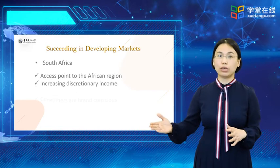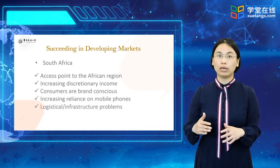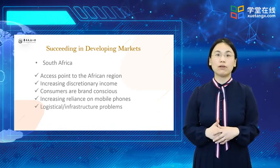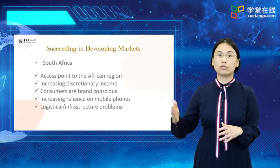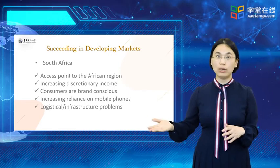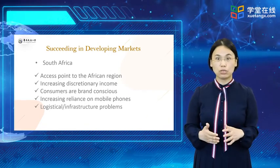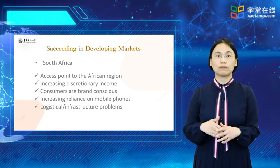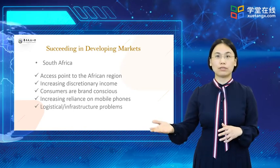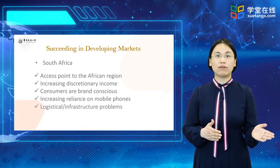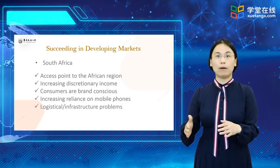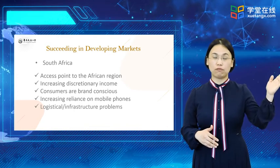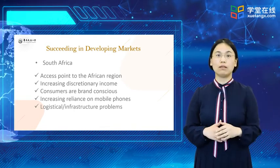Africa has experienced much change in recent years. Although political turmoil in Egypt, Tunisia, and Libya during the Arab Spring is a reminder of the instability that has plagued the continent, and logistical and infrastructure problems prevail, improvements in many other areas such as health, education, and social services paint a rosy picture of the continent's future. McKinsey Global Institute estimates that the number of African households with discretionary income — money available to spend on items other than food — is expected to increase by a robust 50% to 128 million people by 2020.